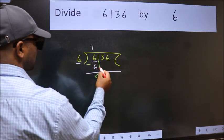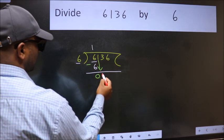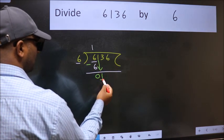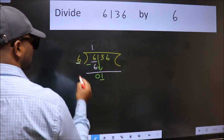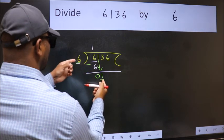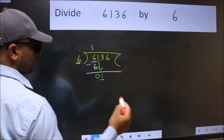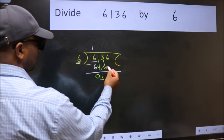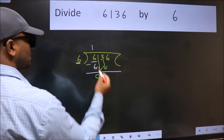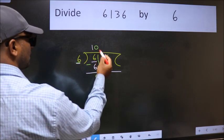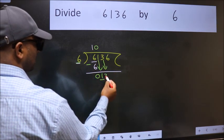After this bring down the beside number. So 1 down. Now here we have 1 and here 6. 1 is smaller than 6. So we should bring down the second number. And the rule to bring down second number is put 0 here. Then only we can bring this number down.